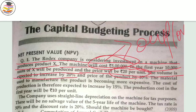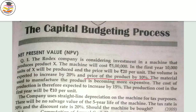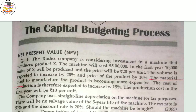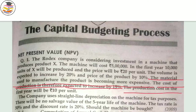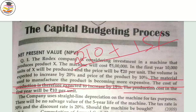The volume is expected to increase by 20 percent — so if production is 10,000 units in the first year, in the second year you can increase it by 20 percent, making it 12,000 units. The price will also increase by 10 percent — so if price is rupees 20, add 10 percent to get 22 rupees. The material used is becoming more expensive and the cost of production is expected to increase by 15 percent. The production cost in the first year is 10 rupees per unit, and from the next year it increases by 15 percent — giving 11.50 rupees.